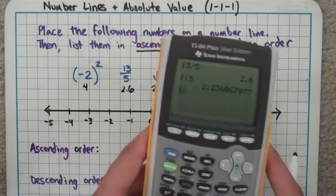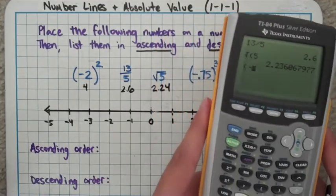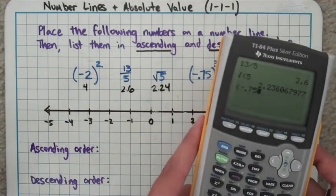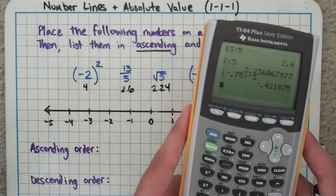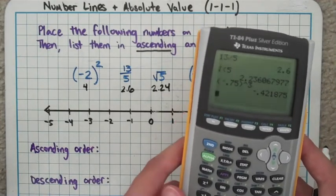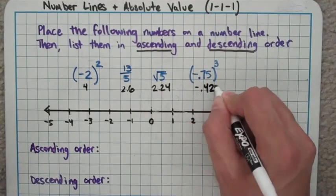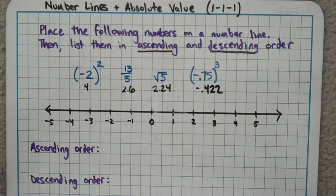And finally, same deal. I'm just going to type in the last guy. Negative 0.75 to the third power is negative 0.422 if I round. And once I have my decimals here, it's not hard to put them on a number line. It's not too bad.